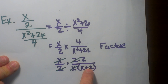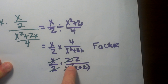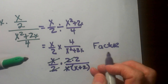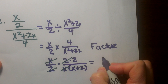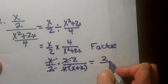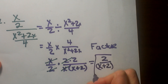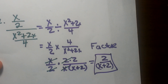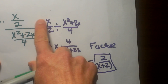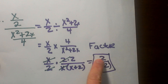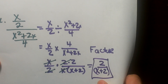Now I cannot cancel this two with this two because this is an expression and you have to have the whole thing. So I have a two in my numerator and an x plus two in my denominator — that is my final answer. So that simplifies from this double stack down to just two over x plus two.